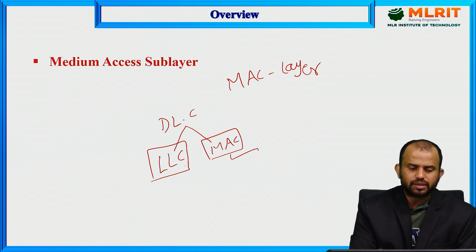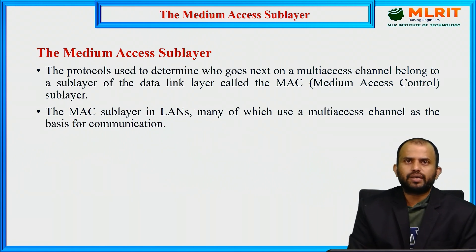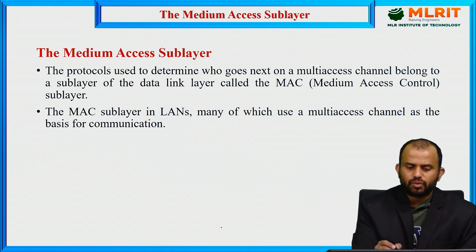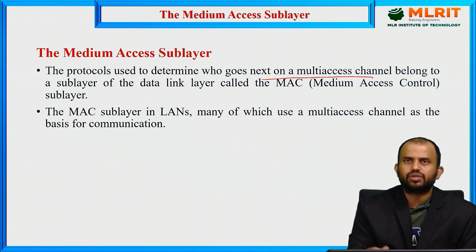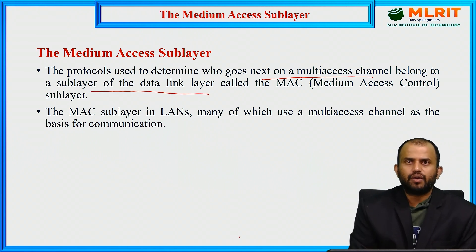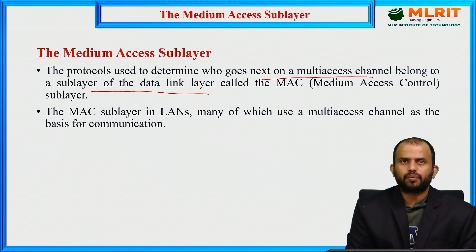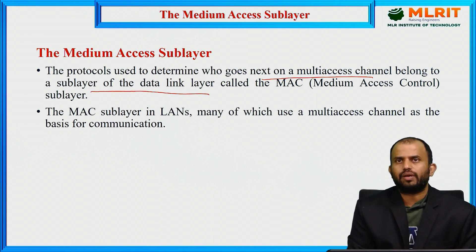The Medium Access sublayer is a protocol that determines how to access the multi-access channel, and it belongs to the sub-layer of the data link layer. We call this the Medium Access Control layer, or MAC layer. Based upon this MAC protocol, we are going to access a multi-access communication channel while establishing the network architecture path.